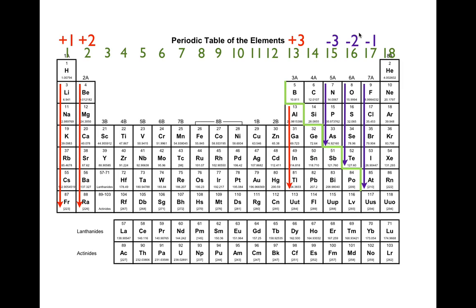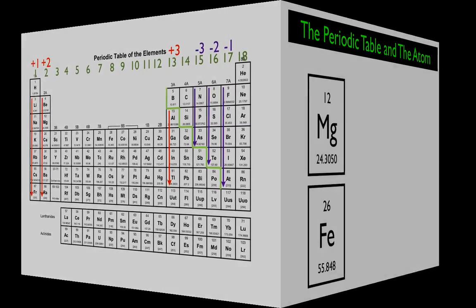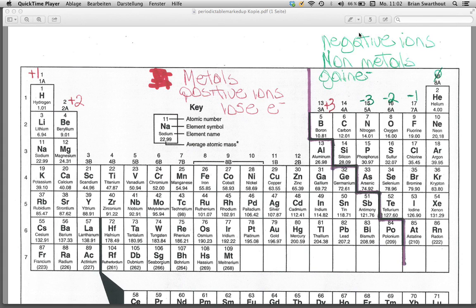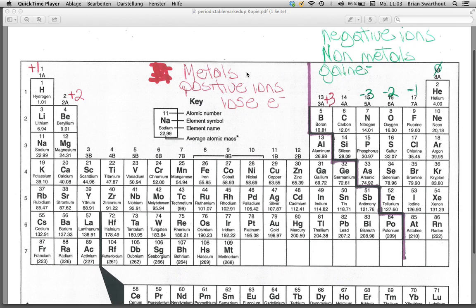You should have those charges written above each of those groups on your periodic table — those are the rules you should know. I'm going to show you my periodic table. I have all that information written down: group 1 → +1, group 2 → +2, group 13 → +3, group 17 → −1, group 16 → −2, group 15 → −3. I put a zero by the noble gases because they don't form charges.